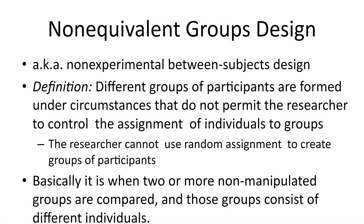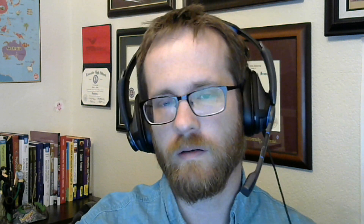The non-equivalent groups design is where different groups of participants are formed under circumstances that do not permit the researcher to control assignment of individuals to groups — the researcher simply can't use random assignment. This is basically when two or more non-manipulated groups are compared and those groups consist of different individuals. The most classic example is males versus females, and tons of studies have looked at gender differences like that.